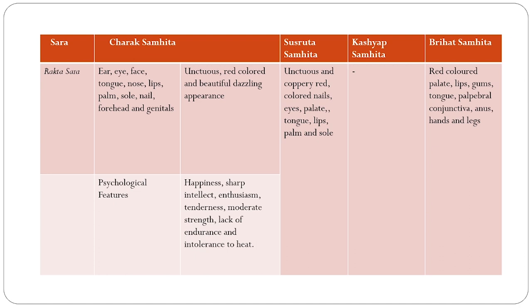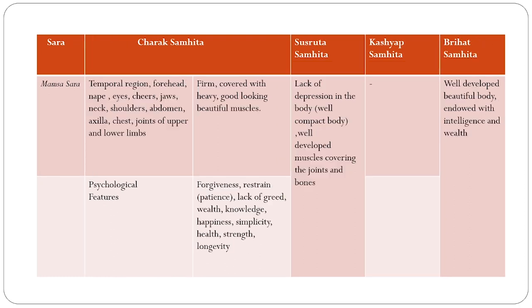Brihat Samhita has incorporated the view that Rakta Sara individuals have red-colored palate, lips, gums, tongue, palpebral conjunctiva, anus, hands, and legs.